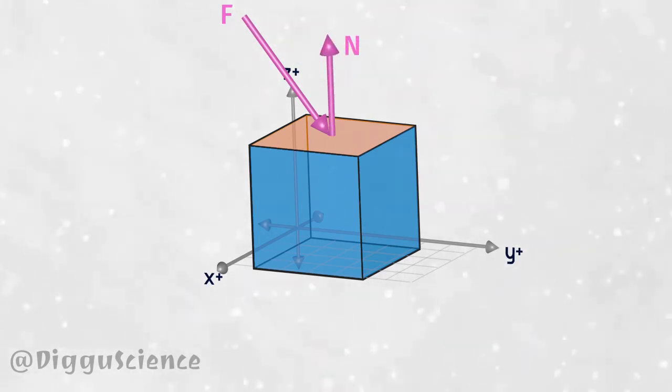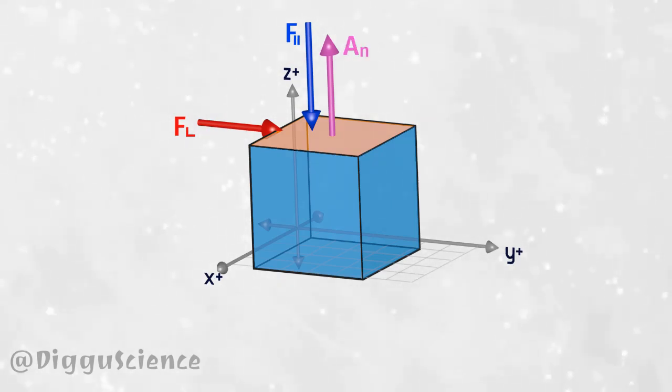These two forces are not in the same direction. We need to decompose the force vector into several component vectors. In this case, the force component is on the z axis and the force component is on the y axis. We can arrange the force components like this: there is a force component perpendicular to the surface normal vector and a force component parallel to the surface normal vector.